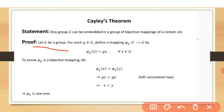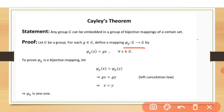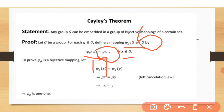Let G be a group. For each small g belonging to G, we define a mapping phi_g from G to G. When we apply phi_g to an element x, it gives us gx, where x belongs to the first G (the domain) and gx belongs to the second G (the range).